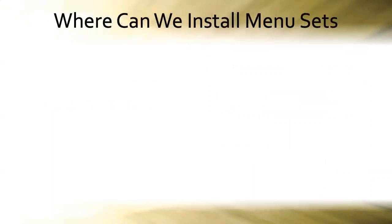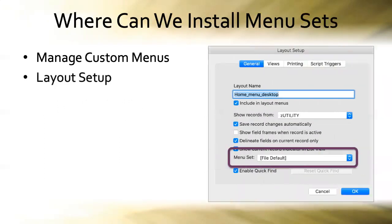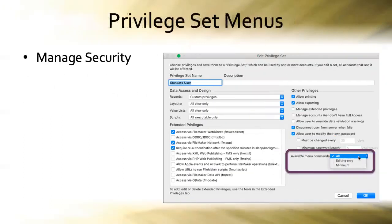We can install custom menu sets in three ways in our FileMaker solutions. The Manage Custom Menus command lets us specify the default menu set for the whole database — that is, every layout. The Layout Setup dialog box lets us install a menu set for one specific layout. And we can use the Install Menu Set script step to activate a menu set. There's also a setting in the Manage Security context, particular to each privilege set, that affects available menu commands — choices are all, editing only, and minimum — but since we have no ability to customize these menu sets, we're not going to include this feature in today's discussion.